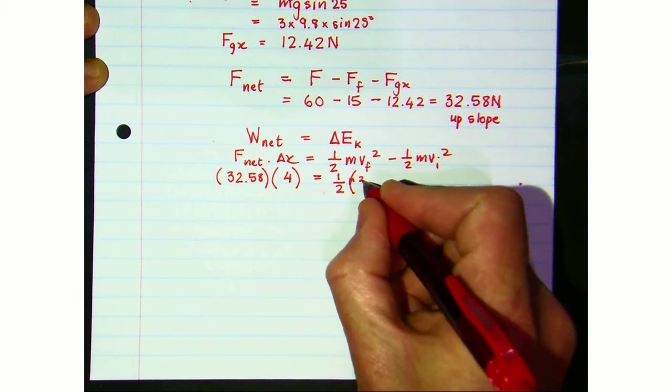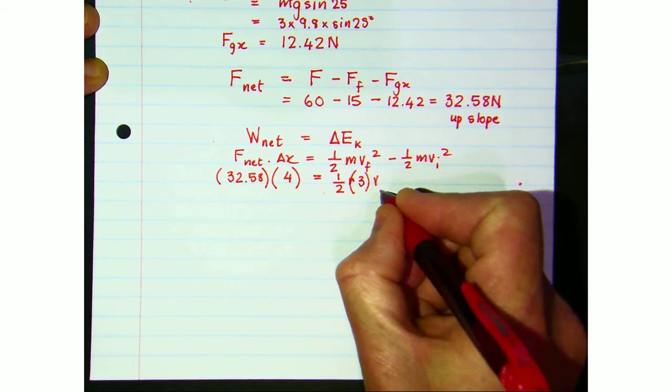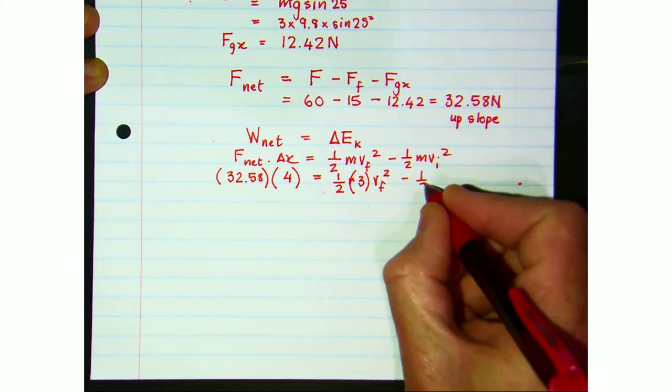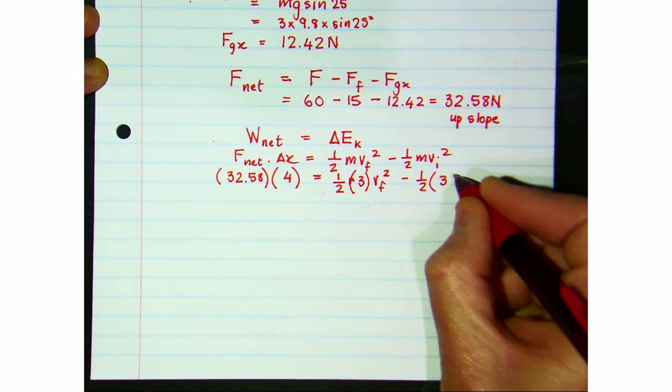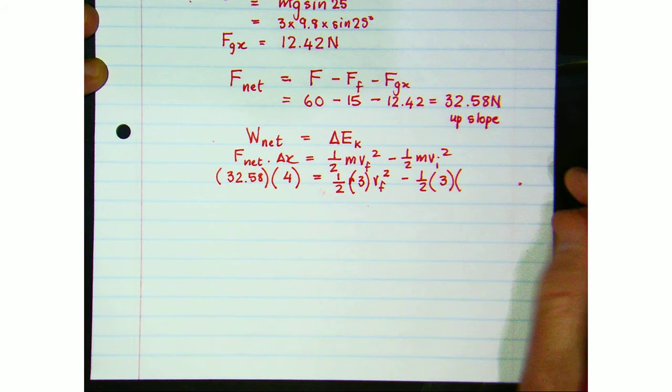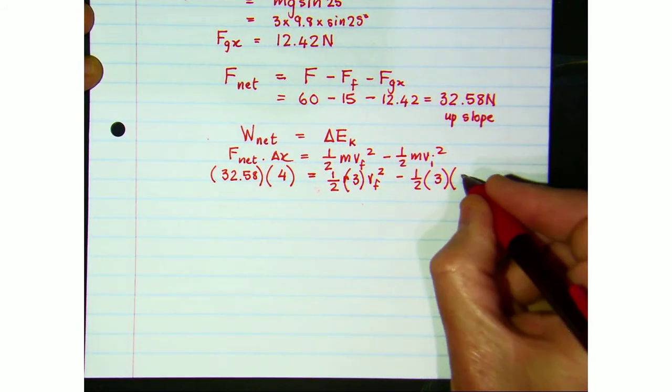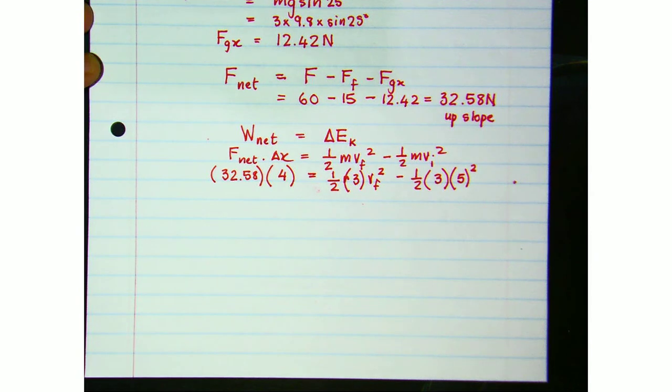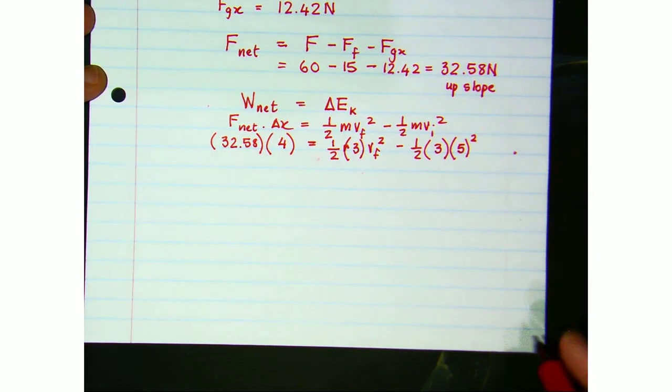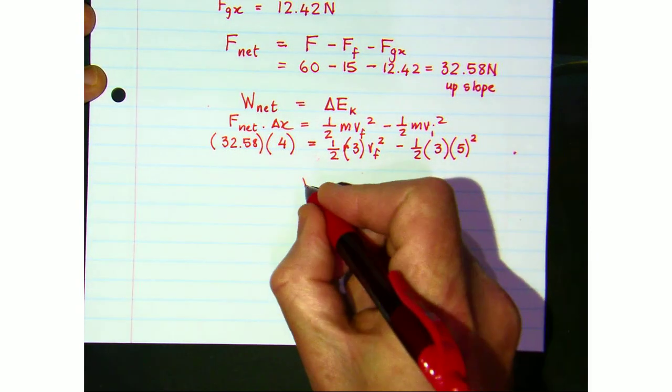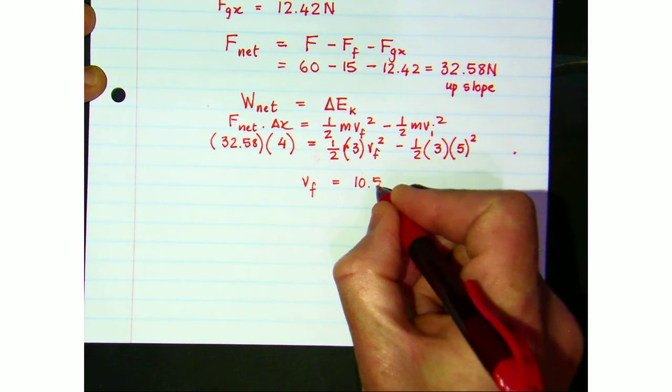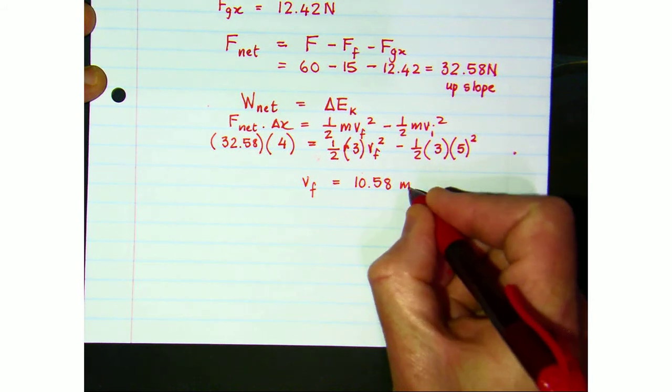Mass is 3 and we're looking for that final velocity after 4 meters. Initial kinetic energy: mass 3, and the car came into the ramp at the bottom traveling at 5 meters per second. If we solve all of that we get v_final to be equal to 10.58 meters per second.